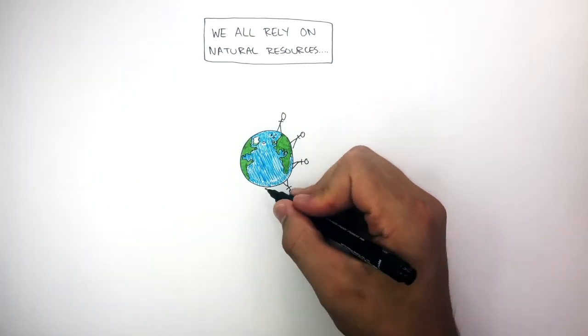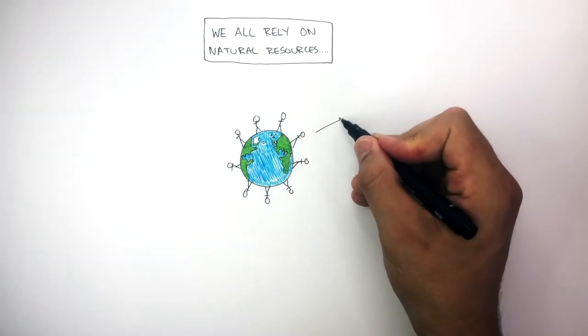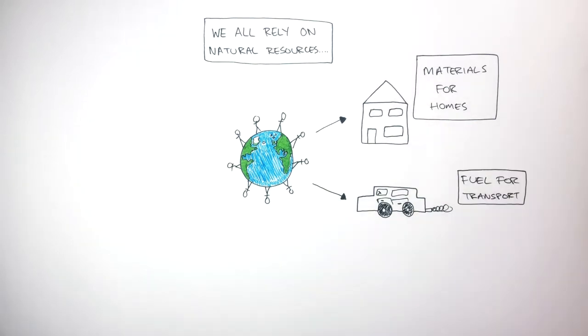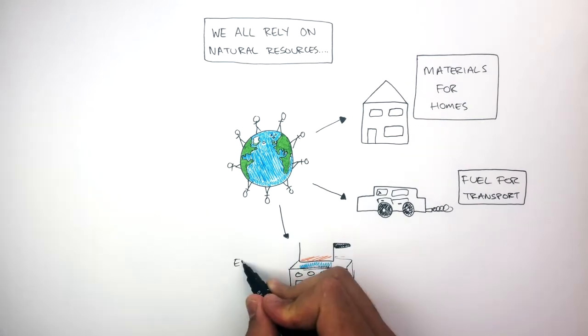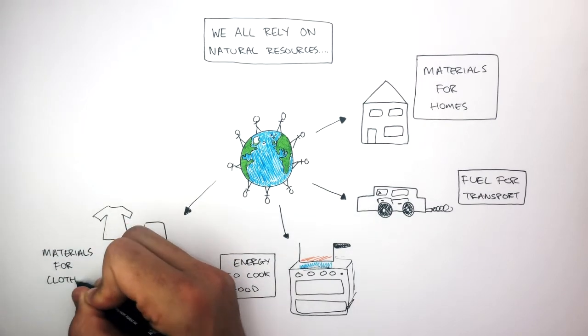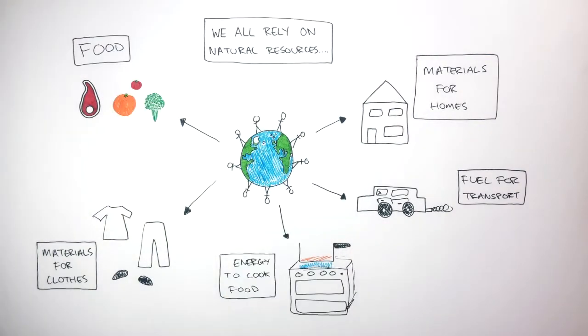Every single person around the world relies on natural resources. For example, we all rely on resources for materials for homes. When it comes to cars and buses and other forms of transport, we all rely on fuel for transport. Everybody eats food every single day, so we all rely on energy to cook food. Everybody wears clothes, so we all rely on materials for clothes. And finally, we all rely on food. Food is a natural resource.